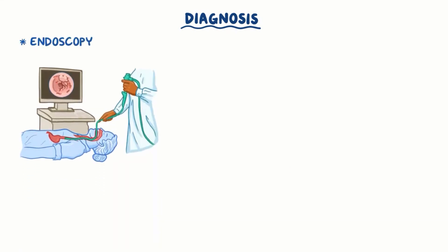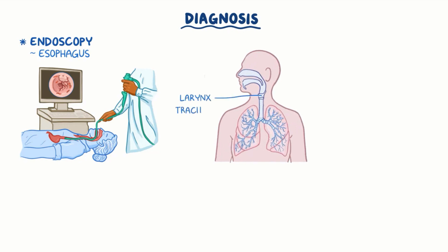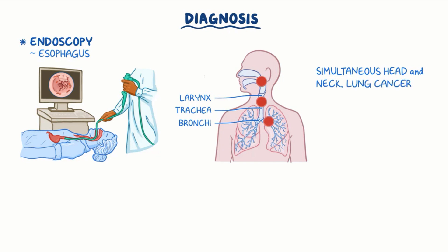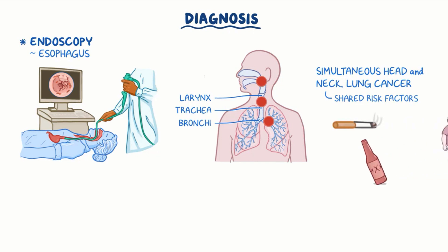Diagnosis of esophageal cancer is essentially made with endoscopy, which is when a tube with a camera at the end is placed into the esophagus to directly visualize the tumor and take a biopsy. Endoscopy of the larynx, trachea, and bronchi should also be performed, since people with squamous cell carcinoma also tend to develop simultaneous head and neck cancer and lung cancer, mainly because these cancers share the same risk factors like smoking, alcohol consumption, and obesity.